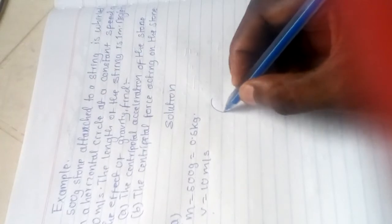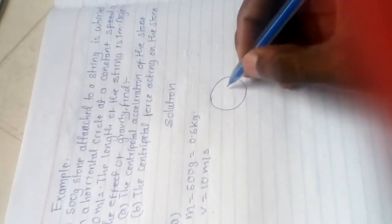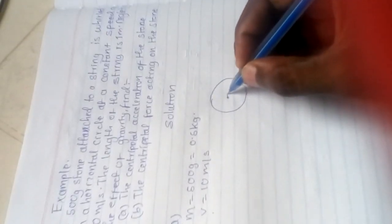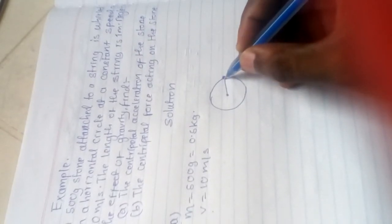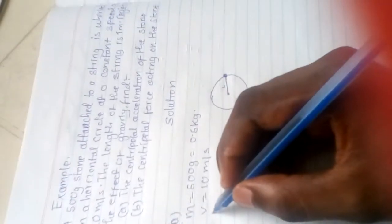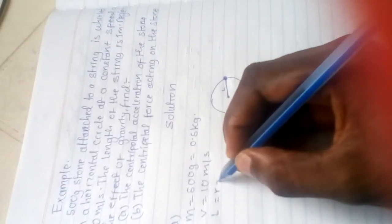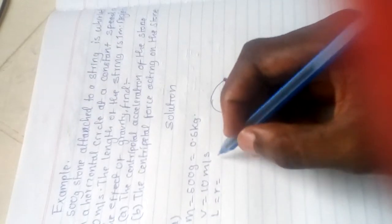The radius is the length of the string in the horizontal circle. Since the stone is attached to the string and moving horizontally, the string length becomes the radius, which is 1 meter.